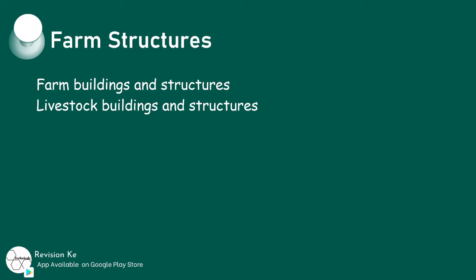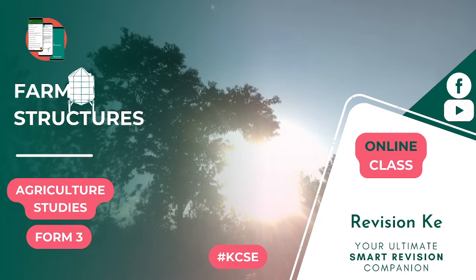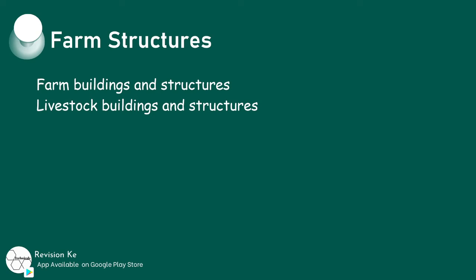We are going to look at farm structures — these are our topic of discussion today. By the end of this topic, we should be able to describe parts of a building, identify materials for construction, describe various farm structures and their uses, describe siting of various structures, and finally construct and maintain farm structures.